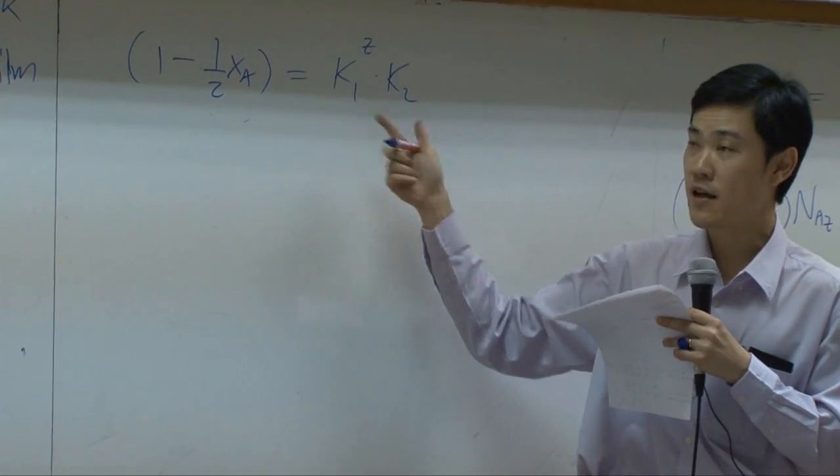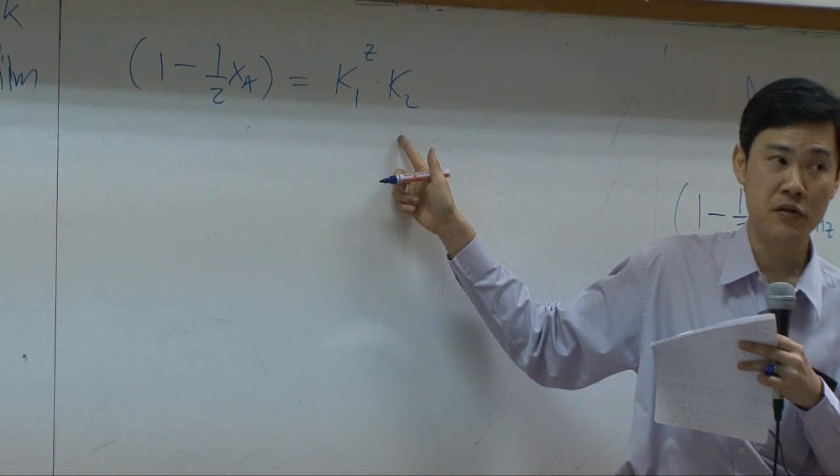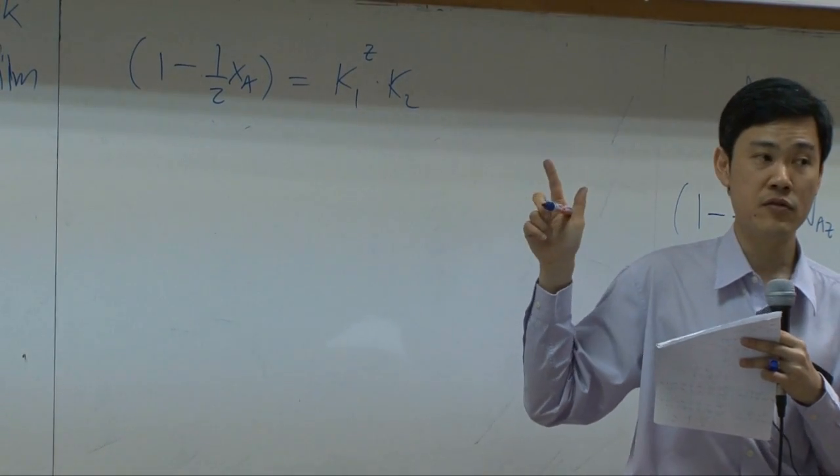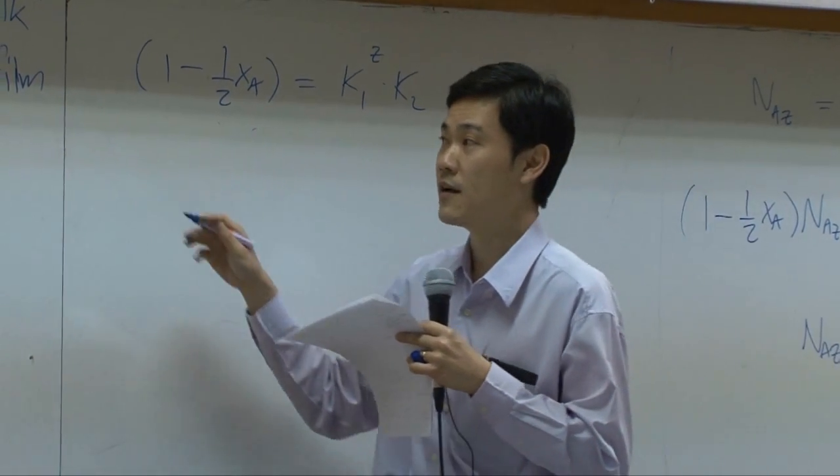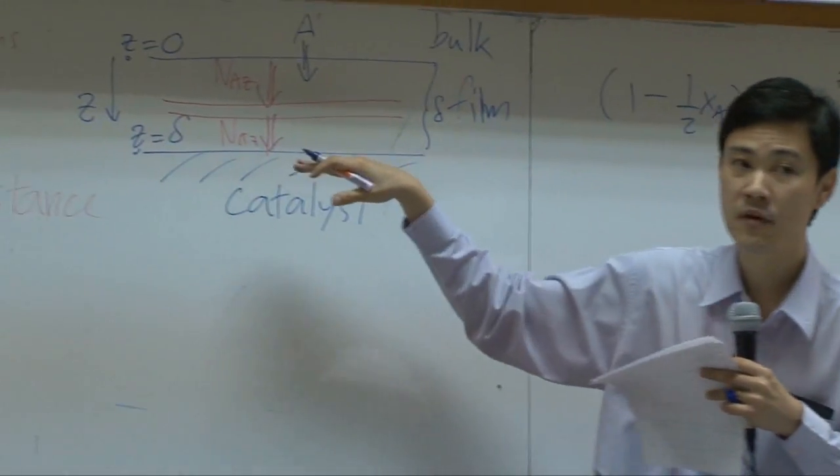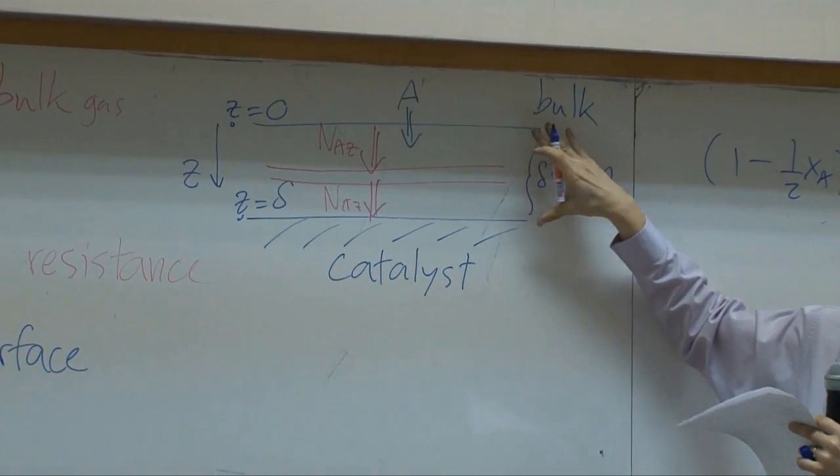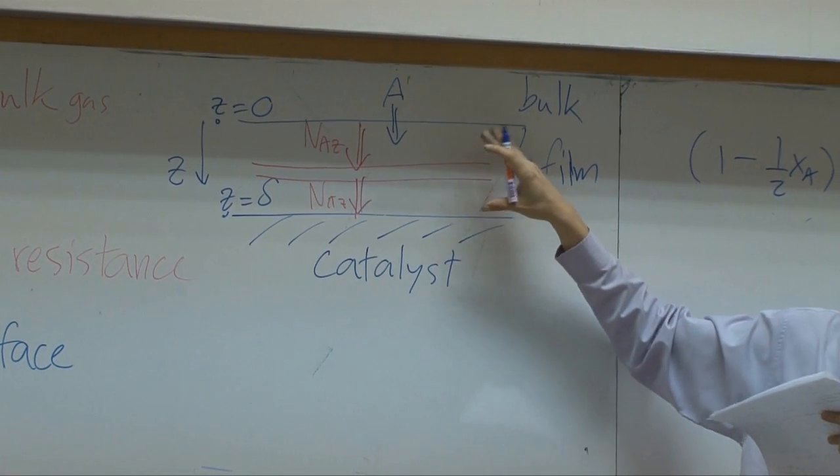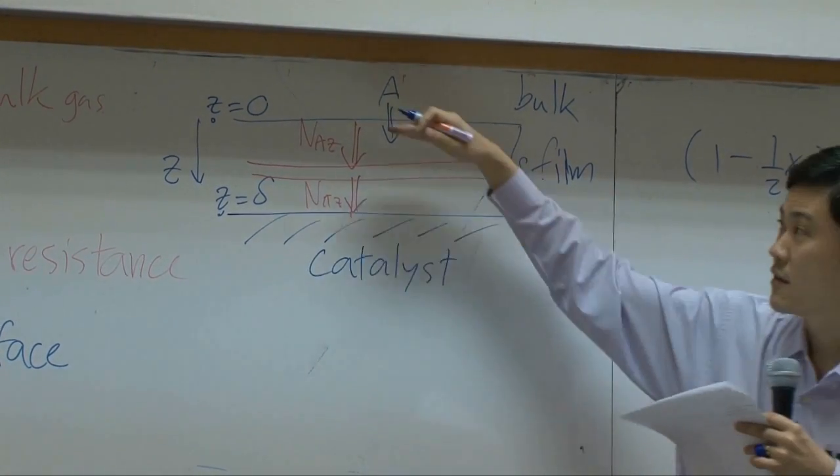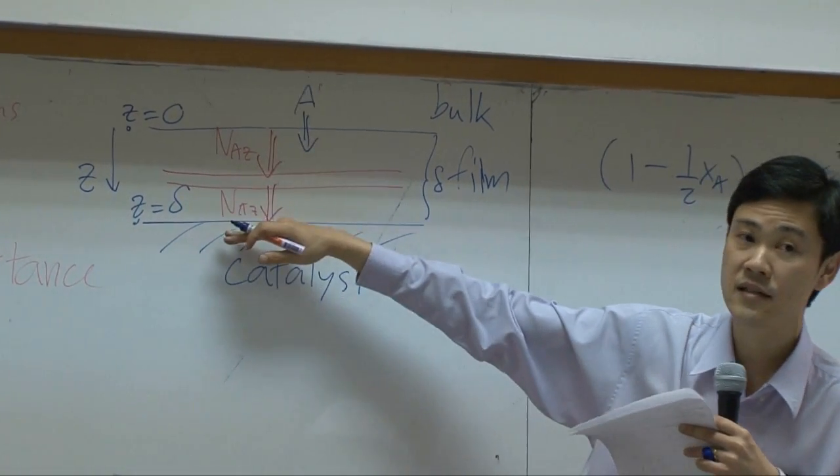And in this equation, there's two variables, K1 and K2. Therefore, you will need two boundary conditions. And normally, boundaries would be along the rim of your system. Your system is a film itself, so there are two obvious boundaries at Z equal to 0 and Z equal to delta.